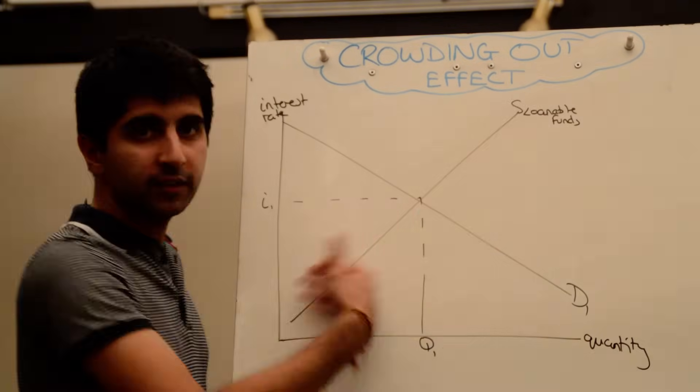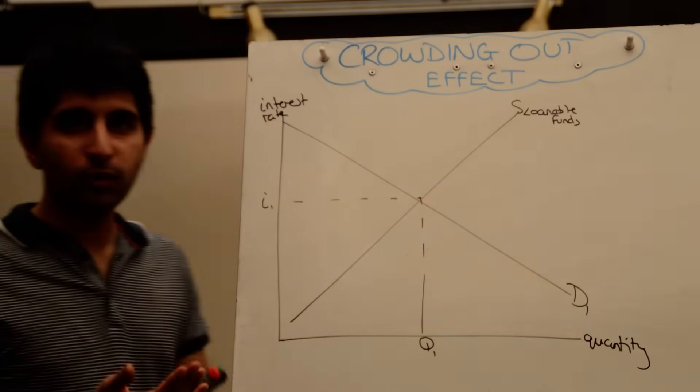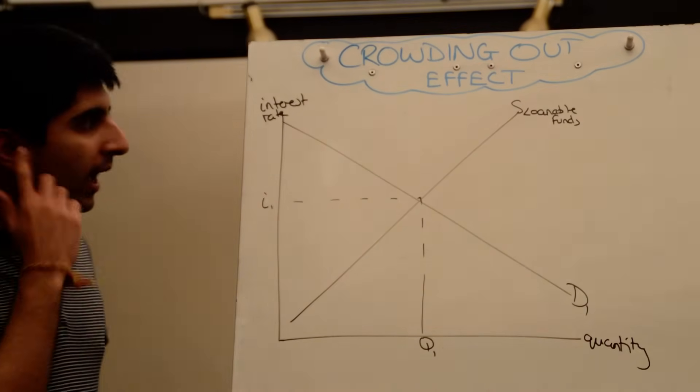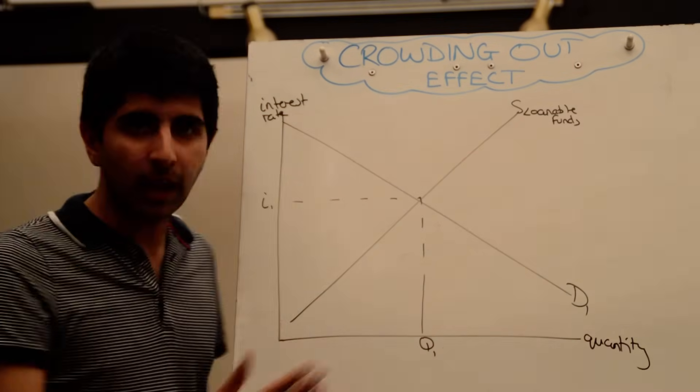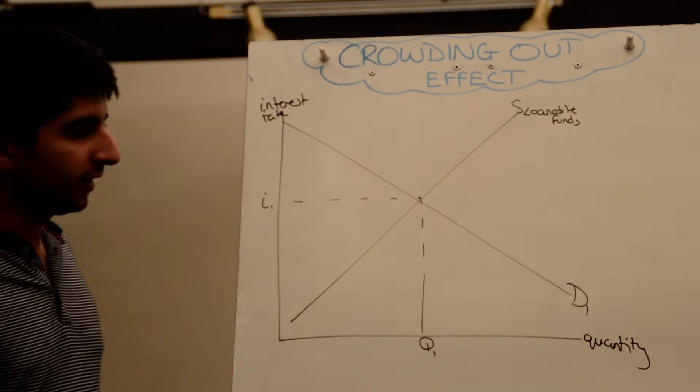We have the supply of loanable funds, upward sloping. The bigger the interest rate, the more supply of loans there will be. The demand is downward sloping, which makes sense - the lower the interest rate, the more demand for these loans.